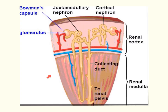Here we have a diagram of the renal pyramid found in the renal medulla, with the tip being the renal papilla. This shows how the collecting ducts empty waste out through the papilla to the minor calyces and then the major calyces. There are millions of these nephron units found within the renal pyramids in the kidneys.